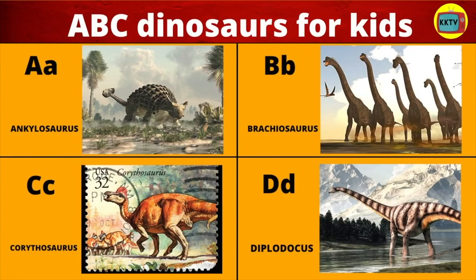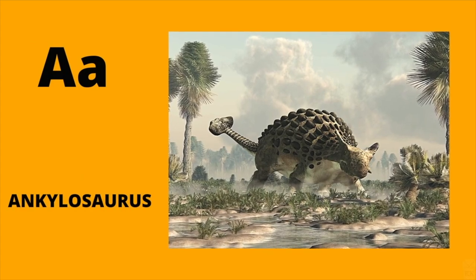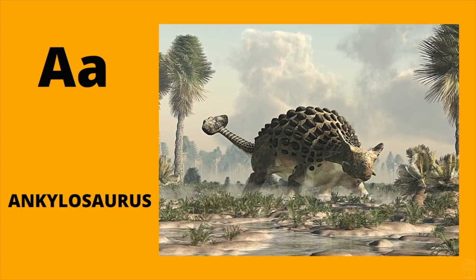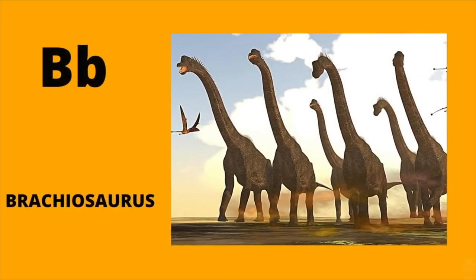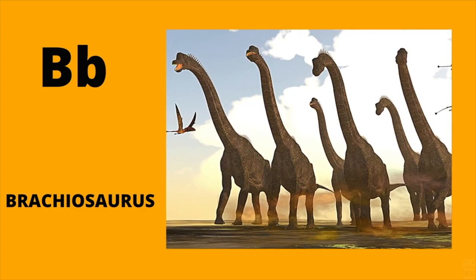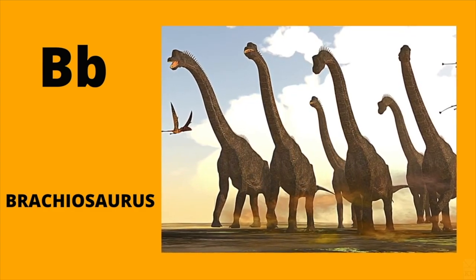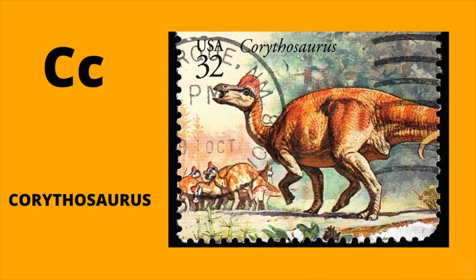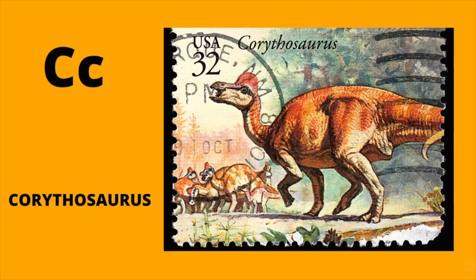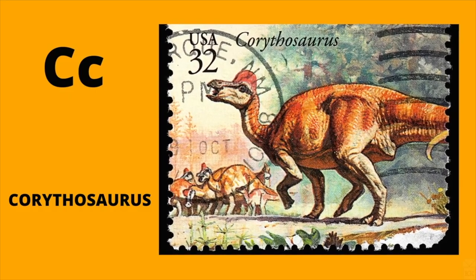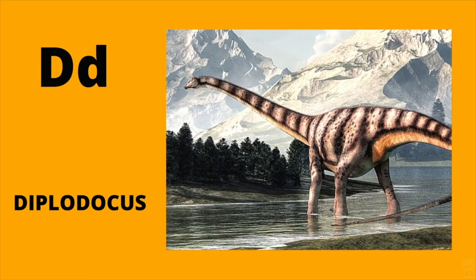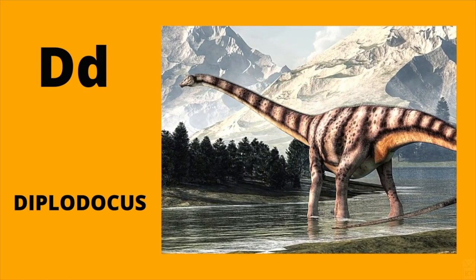ABC Dinosaurs for Kids. A is for Ankylosaurus. A, Ankylosaurus. B is for Brachiosaurus. B, Brachiosaurus. C is for Corythosaurus. C, Corythosaurus. D is for Diplodocus. D, Diplodocus.